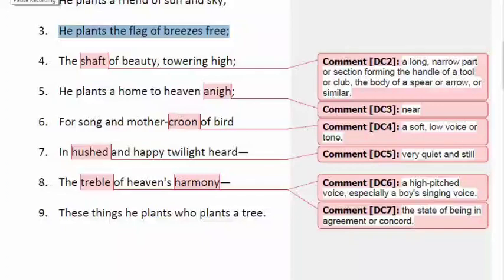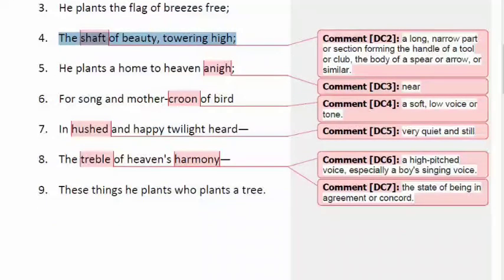Line number four: the shaft of beauty towering high. Imagine a spear or arrow - the long, narrow handle is called a shaft. Which part of the tree can be compared to a shaft? The stem. Imagine a long, beautiful tree - when you look at it, it reflects beauty - a tall, high, tower-like structure with a strong stem, its shaft, looking so beautiful amidst the calmly flowing breeze.